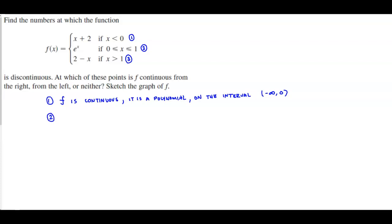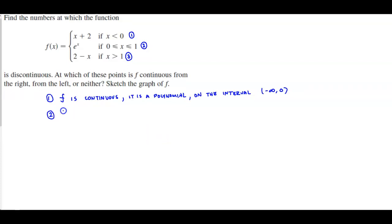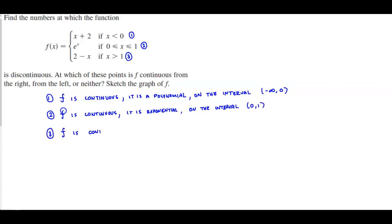For the second piece, f is continuous — it is an exponential function, e to the x — and it is continuous on the interval between 0 and 1. For the third piece, f is also continuous; it is a polynomial, 2 minus x, on the interval from 1 to infinity.